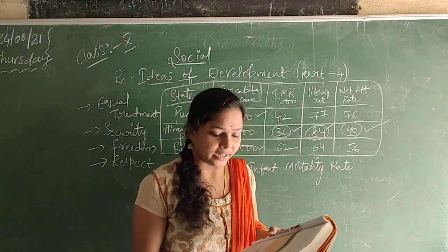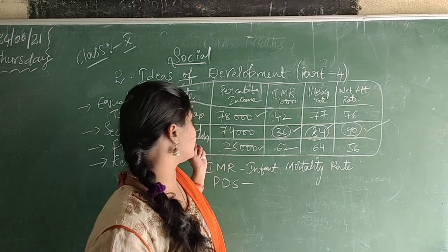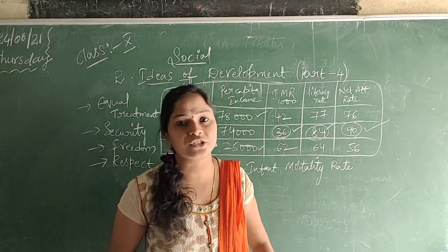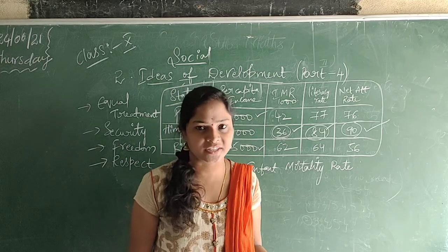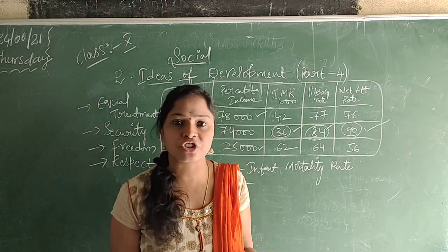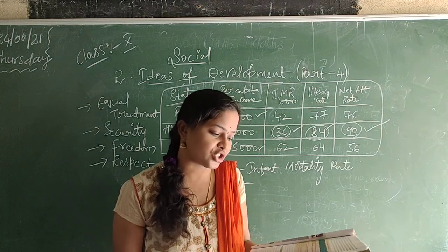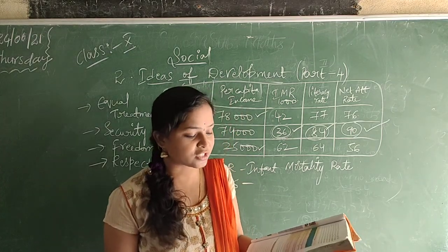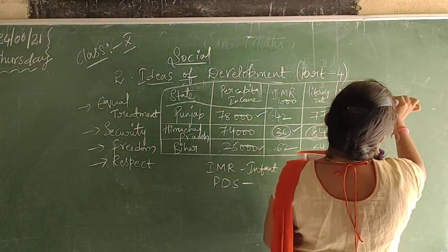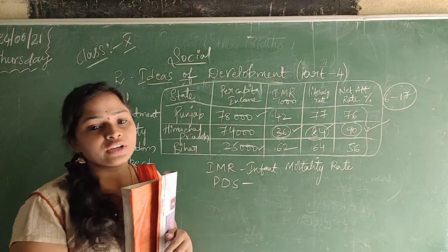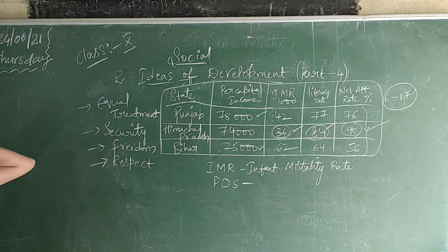Literacy rate measures the percentage of the literate population in the age group of 7 and above. So, for children above 7 years of age, the literacy rate is calculated. Net attendance rate refers to: out of the total number of children in the age group of 6 to 17, the percentage attending schools. So, children aged 6 to 17 who are attending regular schools — that is the net attendance rate.